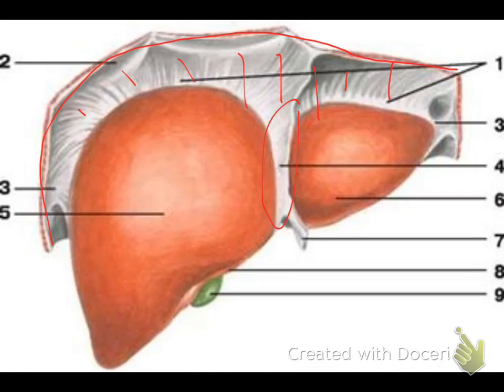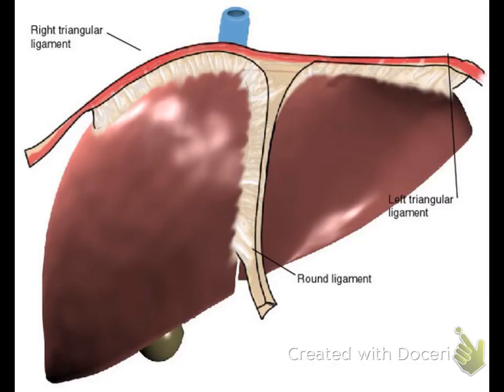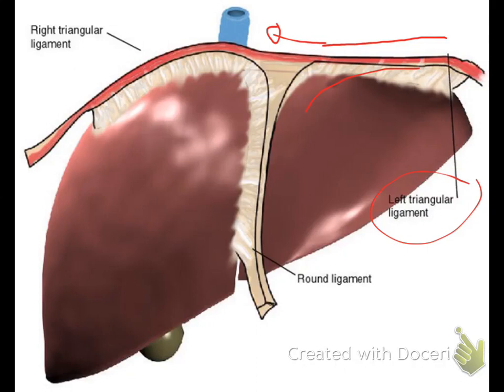Now let's talk in more detail about these ligaments. The first ligament is the left triangular ligament. This left triangular ligament attaches the liver to the left side of the diaphragm, or the left lower hemisphere of the diaphragm. As we see here, as the left triangular ligament extends, it divides into posterior and anterior divisions.